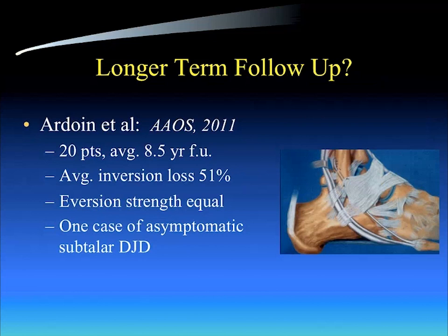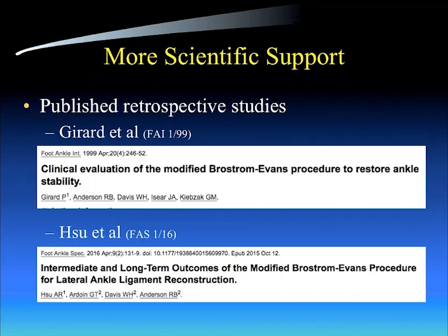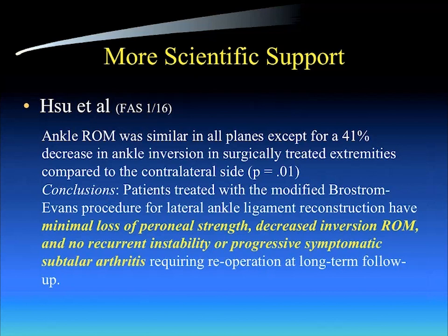Dr. Tourardouin did a follow-up study for the AAOS in 2011 on 20 patients with an average of 8.5 years of follow-up. The average inversion loss was 51%, as expected. Eversion strength was equal. There was one case of asymptomatic subtalar arthritis noted. We've done two published retrospective series — the first by Girard in 1999, and the most recent by Andrew Hsu in January 2016 — noting very good intermediate and long-term outcomes of the modified Brostrum-Split Evans procedure, with no significant subtalar arthritis risk, no peroneal tendon strength loss, and no recurrent instability.